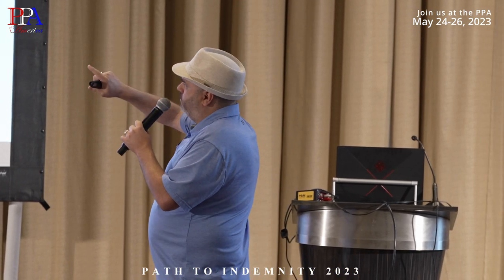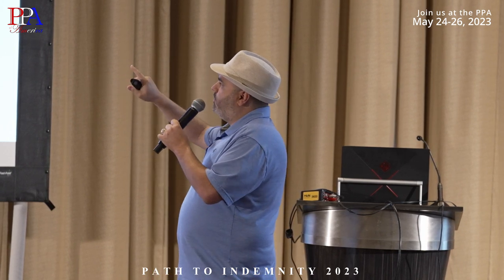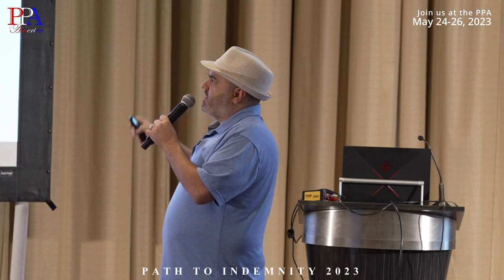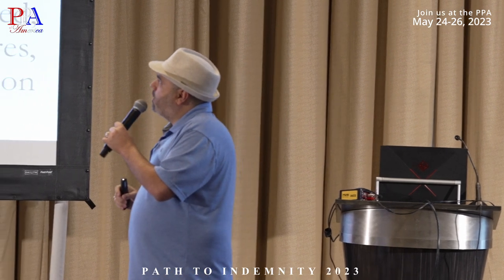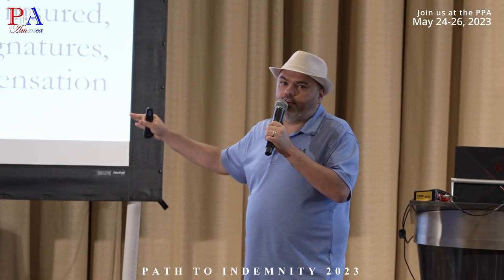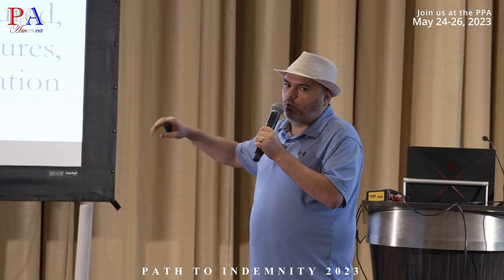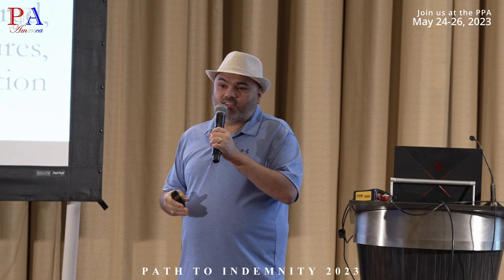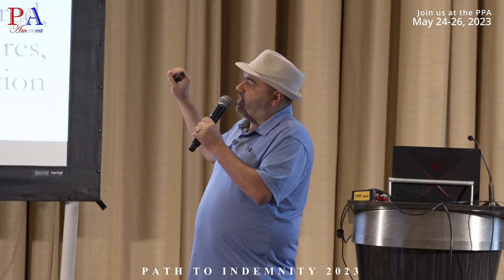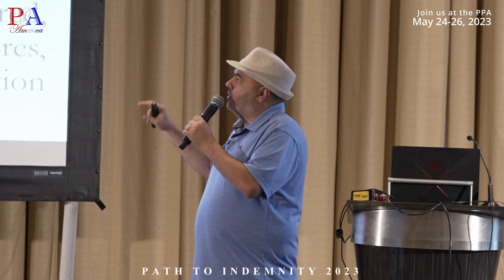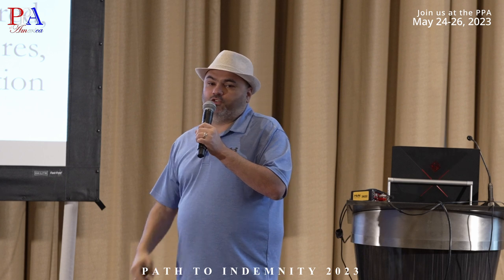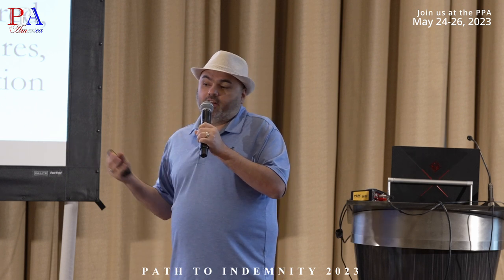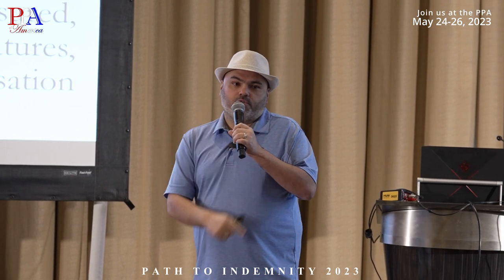Pitfall number two: using a contract that does not comply. The public adjuster shall not provide service until a contract with the insured has been executed on a form filed with approval by the director. At the option of the insured, any such contract shall be voidable for five business days after execution. If you're missing even one required element, your contract doesn't comply. The full name on the contract has to match your license — if you're going by a pseudonym, it does not comply.